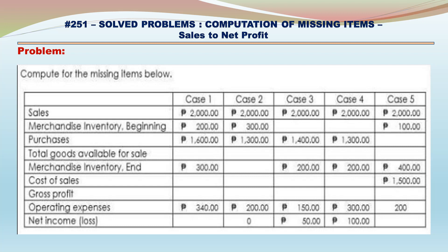Case 5: Sales – 2,000. Merchandise Inventory Beginning – 100. Purchases is missing. Total Goods Available for Sale is missing. Merchandise Inventory Ending – 400. Cost of Sales – 1,500. Gross Profit is missing. Operating Expenses – 200. Net Income/Loss is missing.